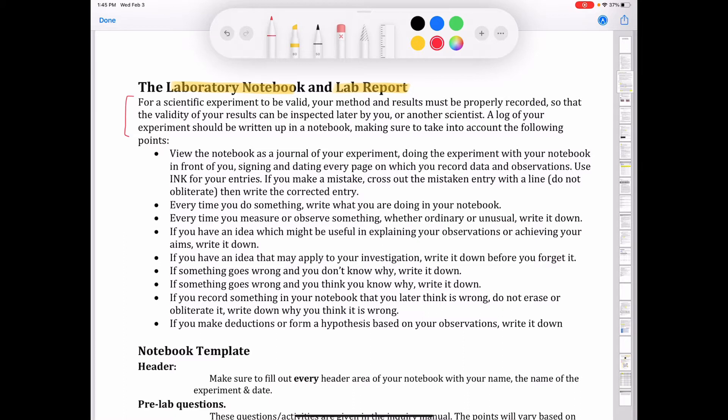A log of your experiment should be written up in a notebook, making sure to take into account the following points. Let's go through these. You're going to view your notebook as a journal. You want to sign and date every page and be sure to use ink for everything. Either use blue or black ink, don't use any funny colored inks, and don't use pencil in a lab notebook. Every time you write something in the lab, every time you're doing something, you want to record that in your notebook. Every time you make an observation, whether it's normal or unusual, be sure to write it down.